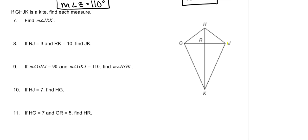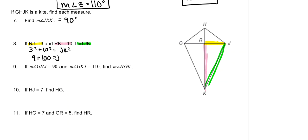Find the measure of angle JRK — that's this 90-degree angle. RJ is 3 and RK is 10; find JK. Using the Pythagorean theorem: 3 squared plus 10 squared equals JK squared. 9 plus 100 equals 109. Taking the square root of both sides, JK equals the square root of 109, which can't be reduced further.